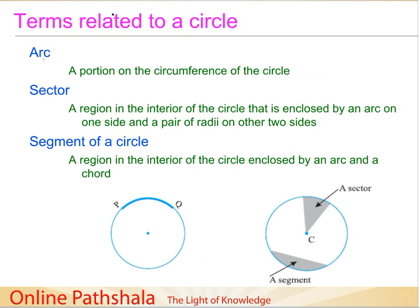Now let us continue with further discussion on the arc. If you see this figure, what we have done is taken a portion on the circumference of the circle. This portion on the circumference of the circle is called an arc. So this is an arc on the circle.